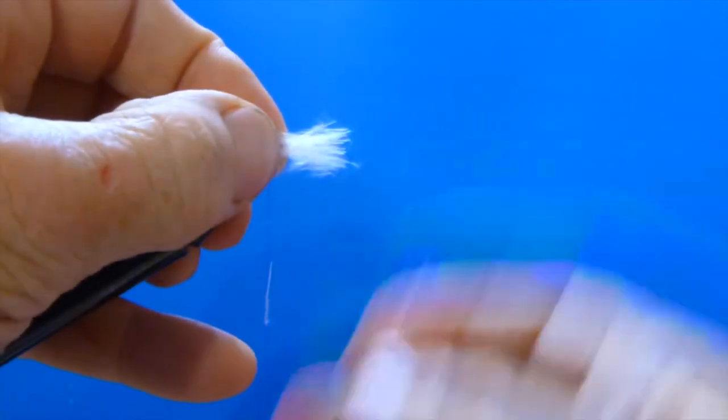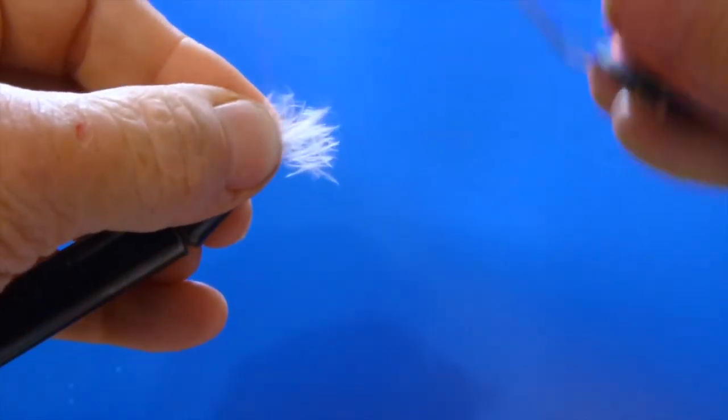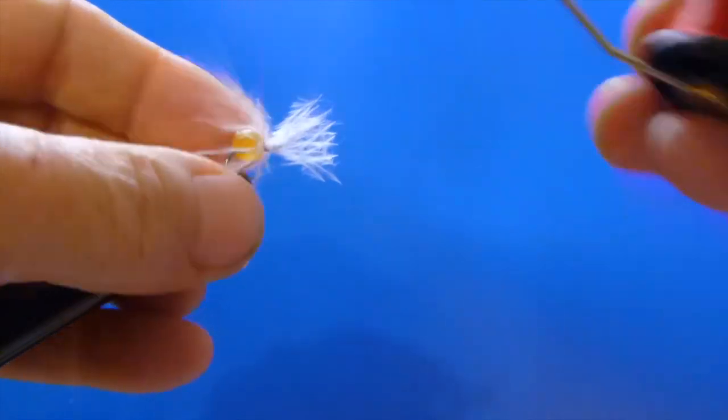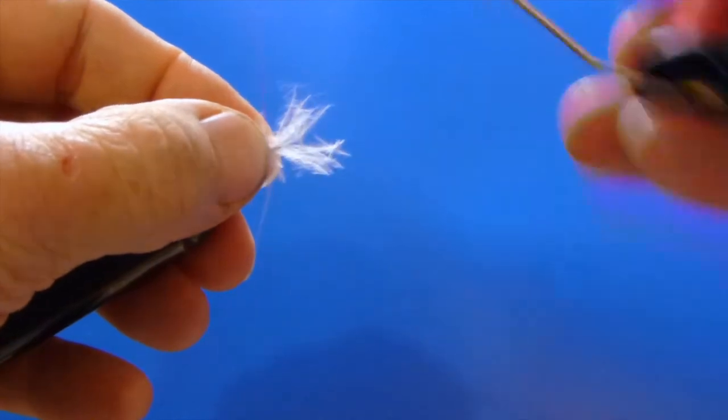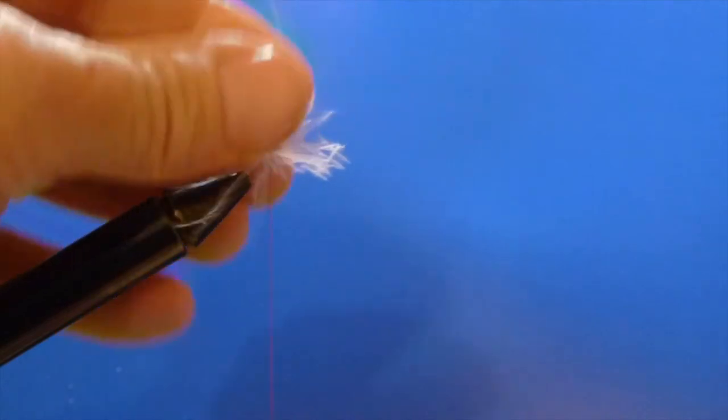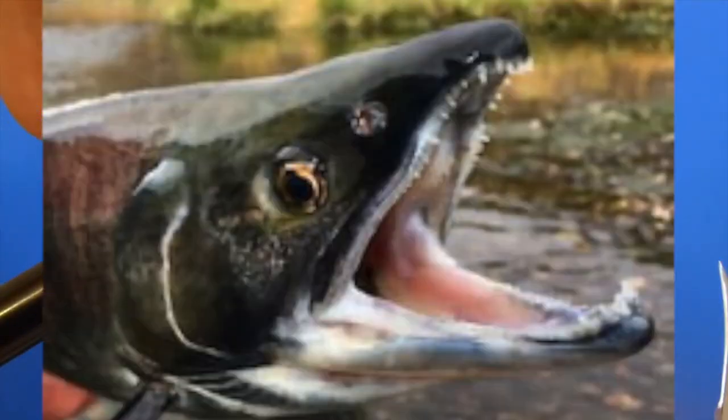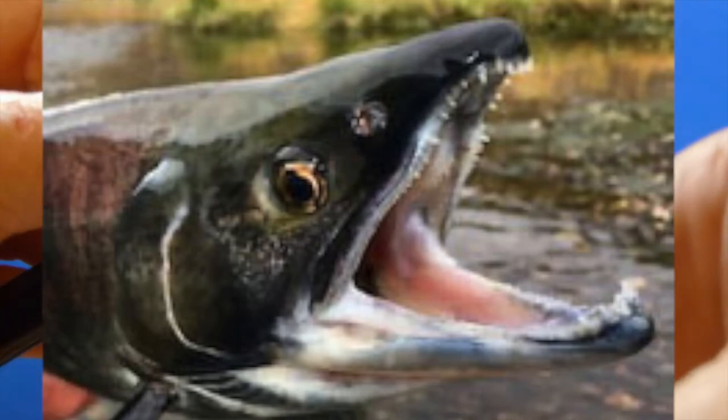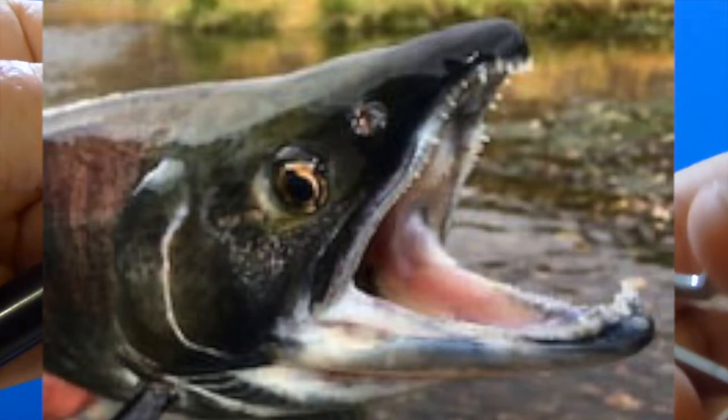Now you're asking me why this would help with setting the hook. Well I think these strands of marabou can get stuck in the sockeye's teeth. I'm going to show you a photo of the sockeye's teeth and you can see exactly what I'm talking about. They are snaggletooth, they're big, they're nasty, and I think this can help keep it in their mouth just a little bit longer on occasion and increase your likelihood of hooking up.